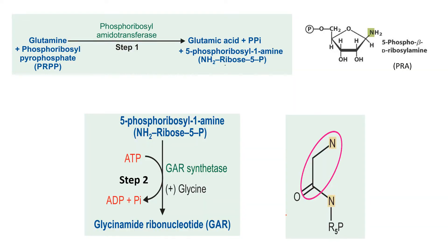It should be noted that purines are not produced as free bases; rather, they are synthesized piece by piece upon a pre-existing ribose 5-phosphate. In the first step, glutamine donates its amido nitrogen to PRPP, displacing the pyrophosphate and thereby creating an N-to-C bond. This nitrogen becomes the N9 of the purine ring, and the carbon is the C1 of ribose 5-phosphate, forming an N-glycosidic linkage.